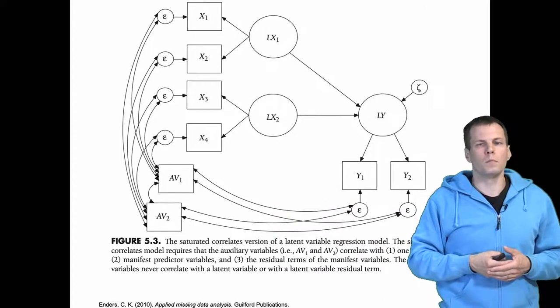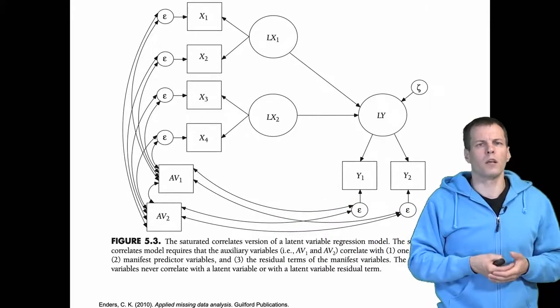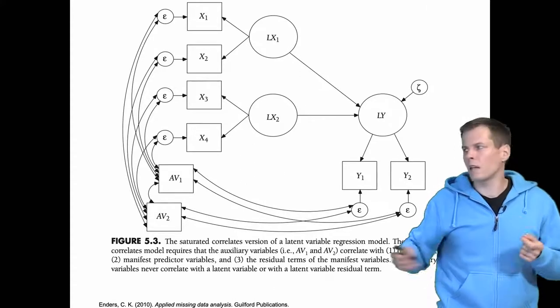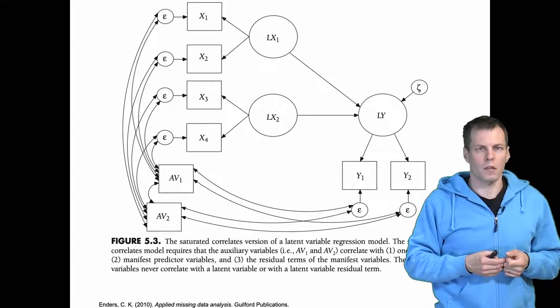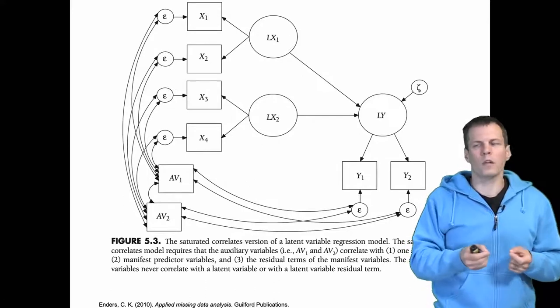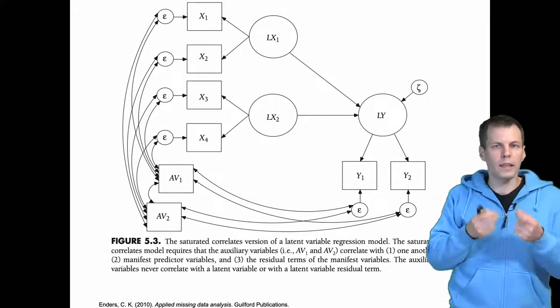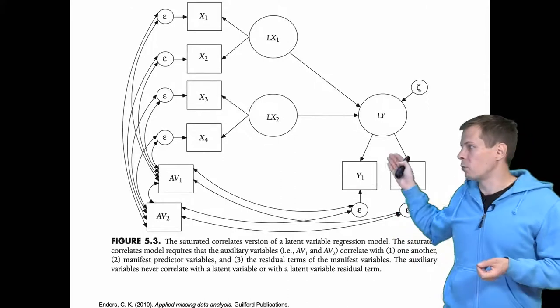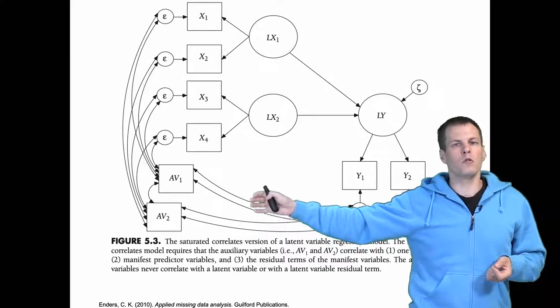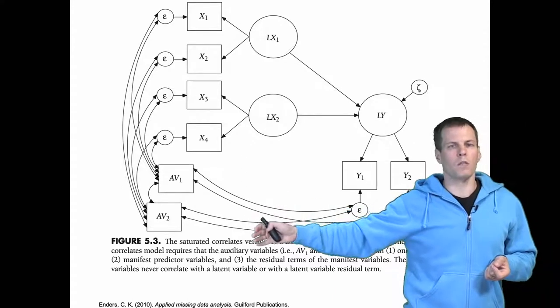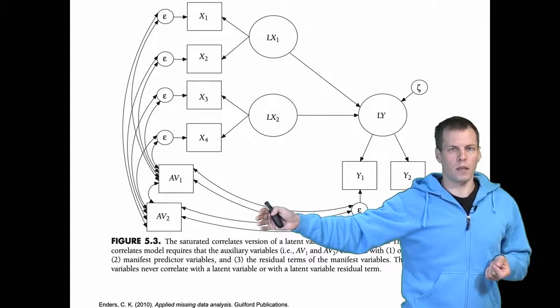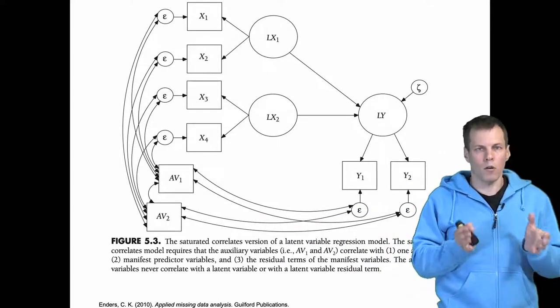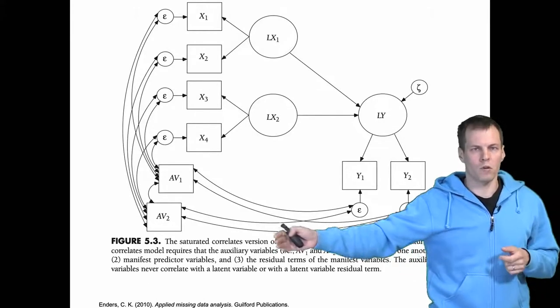So what's the logic here? The logic is that we don't constrain the correlations between any of these variables and any of the observed variables to any values. So importantly, this error term of the latent variable, because the latent variable is not observed, that should not be freed because that would make the model not identified. So we do the simplest possible thing to allow these auxiliary variables to be freely correlated with the observed variables, and that is adding the correlations between the error terms and the auxiliary variables.